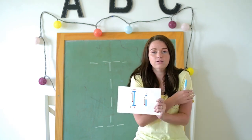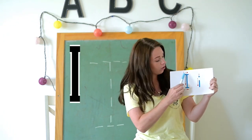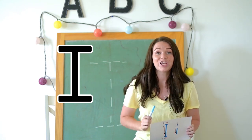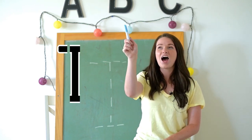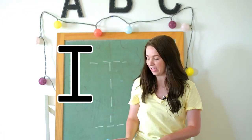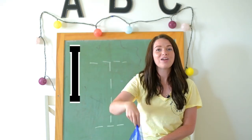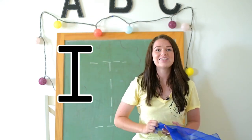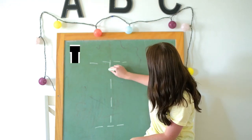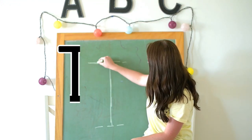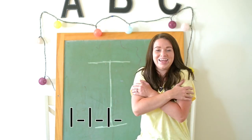Now let's say it in a really cold voice: down, up, across, across I. Can you trace it in the air with me? Down, up, across, across I. Let's do it with this fun little scarf: down, up, across, across I. Very good. Now let's trace it on our blackboard: down, up, across, across I. I, I, igloo.